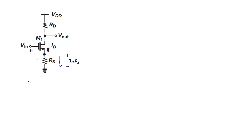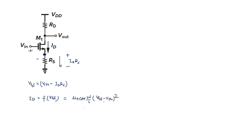In this case, VGS is nothing but Vin minus ID·RS. So VGS is a function of current, and overall the drain current ID is a function of (Vin minus ID·RS minus VTH) squared. The ID term appears both inside the quadratic term and on the left-hand side, so when you solve this equation, you get a linear equation — ID is linearized.